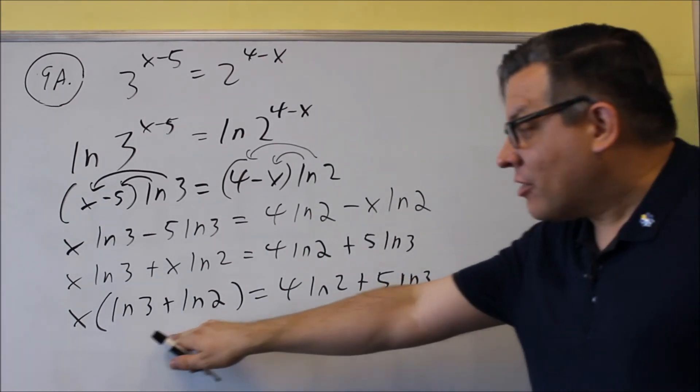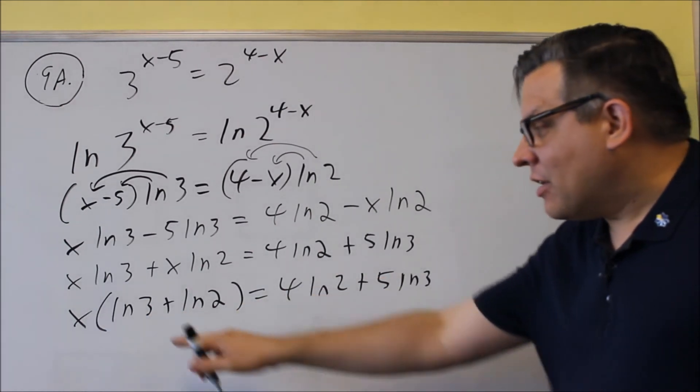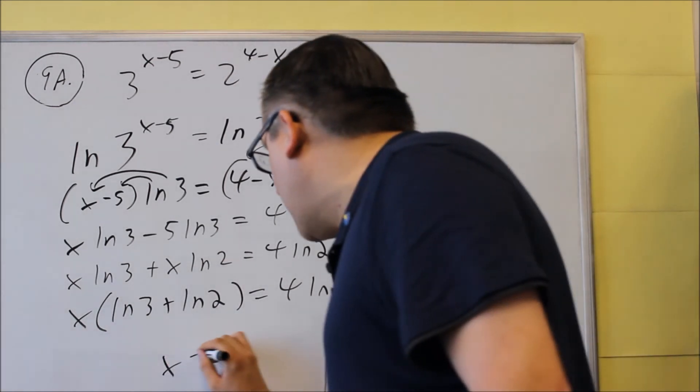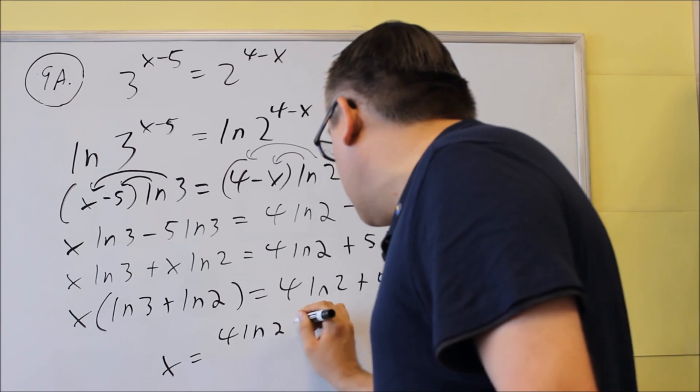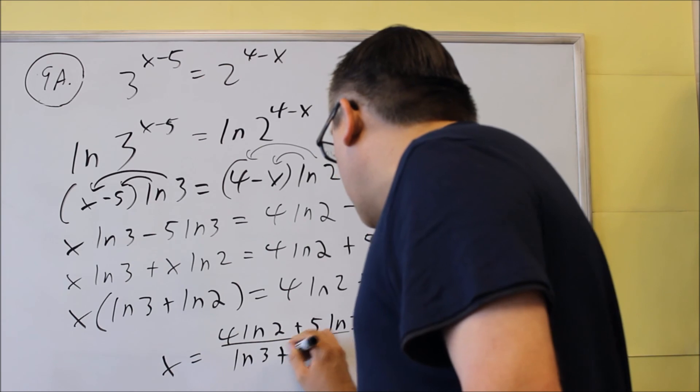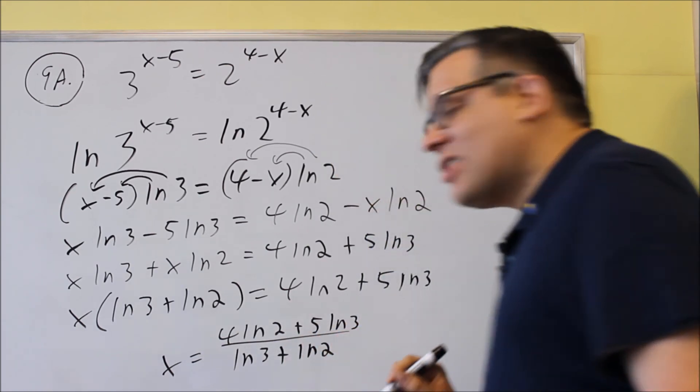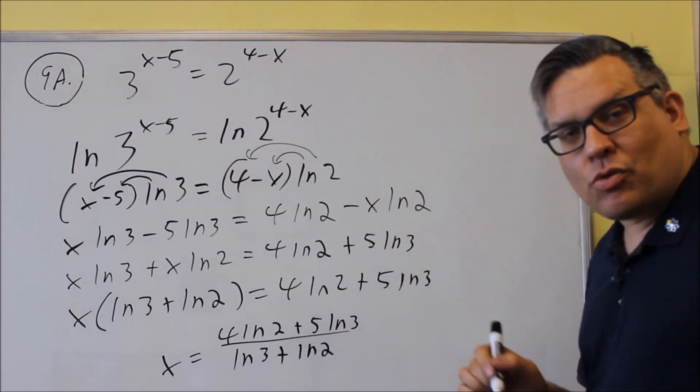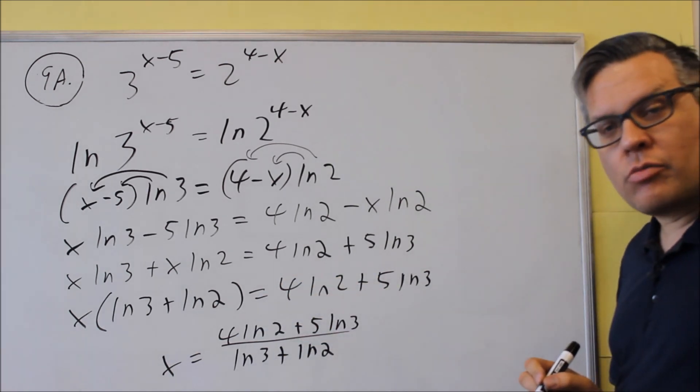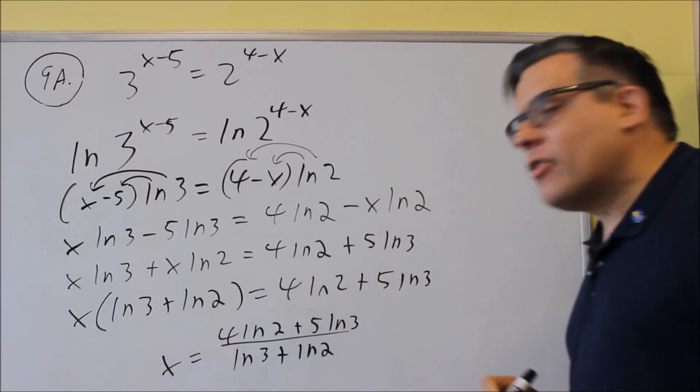And because I've factored out the x, that now means that I can divide both sides by what's in front of the x right there, and I will get my final answer. 4 ln 2 plus 5 ln 3 all over ln 3 plus ln 2. On the test, you don't have to worry about getting a decimal equivalent to this. It's okay to leave your answer in terms of logarithms, and so it's fine just to leave your answer like that.